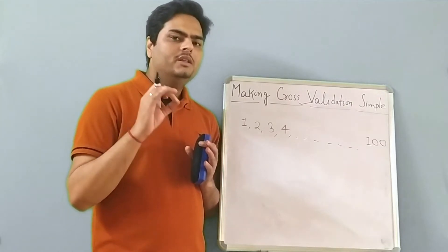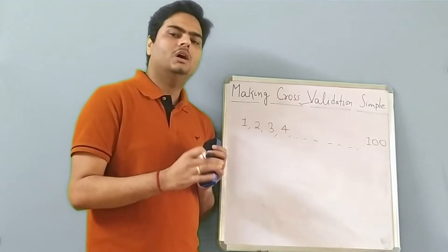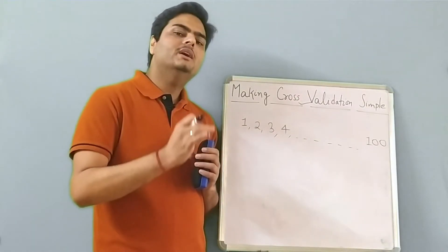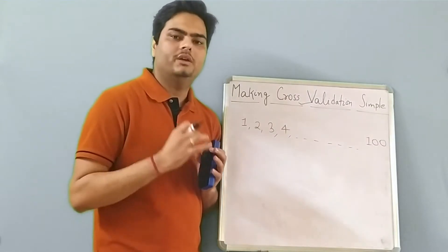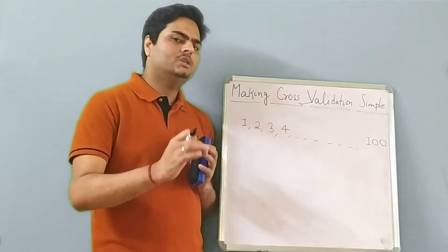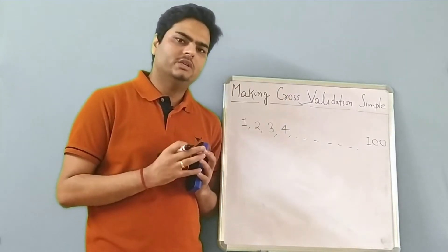Then what you do, you just ask the other friend, hey, how was the movie? What you are doing here is nothing but reassuring how was the movie. This is nothing but cross validation. How to understand that in the context of data science? Let's try to understand.